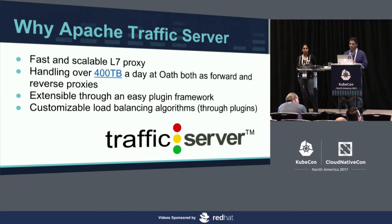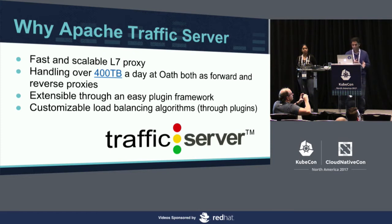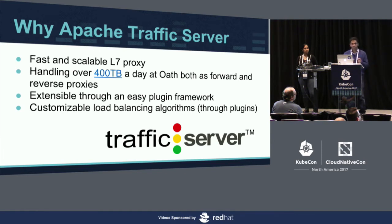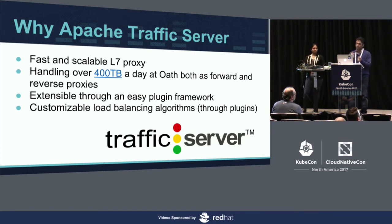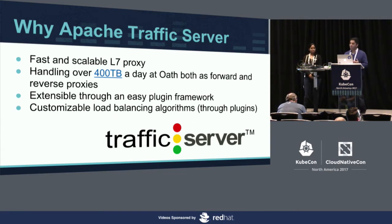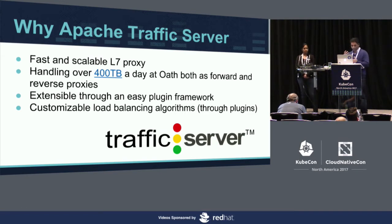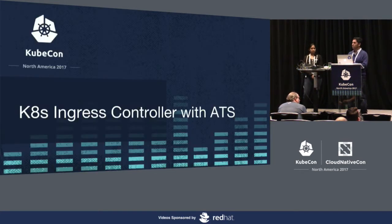So why Apache Traffic Server? It's fast and scalable, and we have a huge investment from Yahoo into ATS with many plugins already built. It's also easy and extensible — if we want to build a new load balancing algorithm like round-robin, least connections, or vector least connections, we can quickly develop a plugin and drop it in. It's very easy to modify the hook of every HTTP transaction hook in ATS, and we can customize a lot for our requirements.